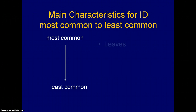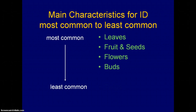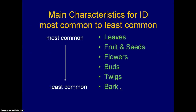The most commonly used characteristics are probably leaves, although taxonomists will often use seed morphology in their identification of individual species. Flowers and buds are also useful, and twigs and bark are useful to some extent. However, bark can be rather ambiguous, so it's not a primary characteristic I recommend — it can sometimes serve as a secondary characteristic after using some of the others.